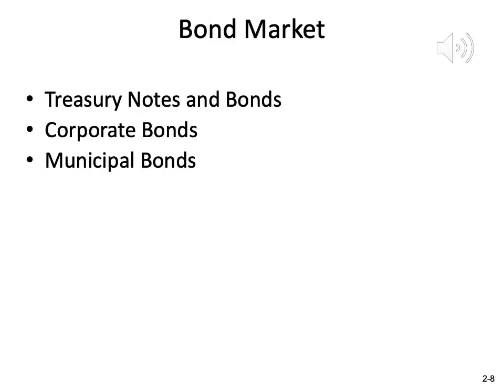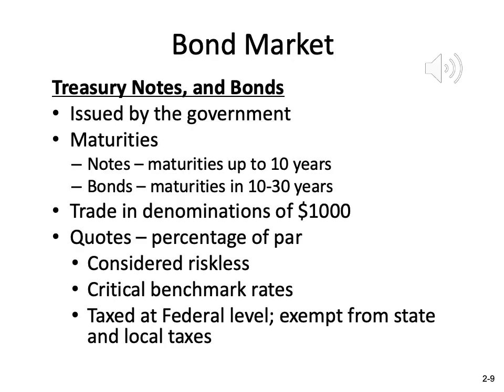Now we move on to the bond market. We are going to talk about treasury notes and bonds, corporate bonds, and municipal bonds. Treasury notes and treasury bonds are both issued by the US government, just like T-bills. The difference among treasury bills, treasury notes, and treasury bonds is their maturities. Treasury bills have maturities of less than one year, treasury notes have maturities from 1 to 10 years, and treasury bonds have maturities from 10 to 30 years. That's the only difference among the three.